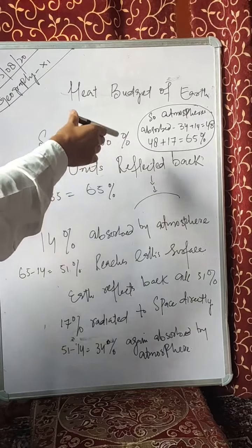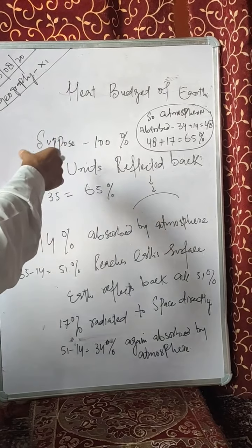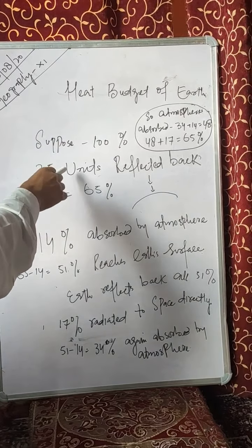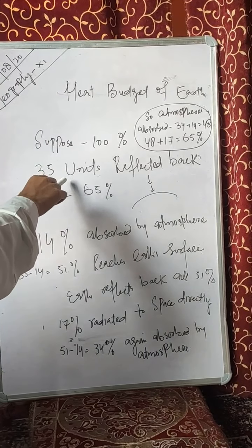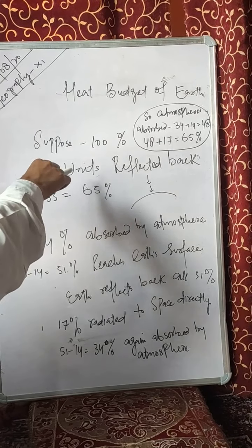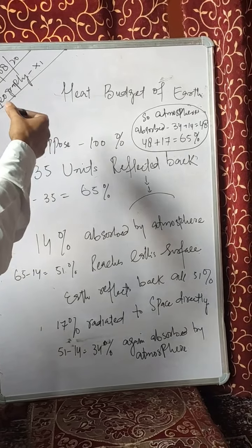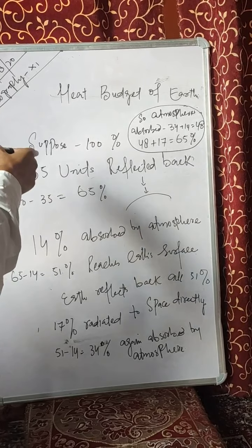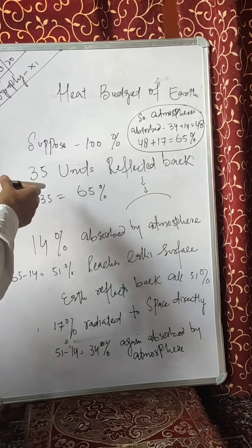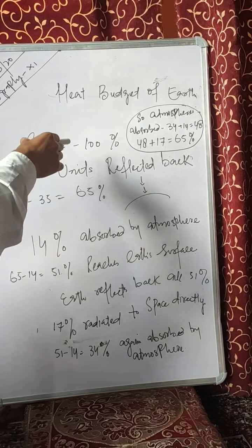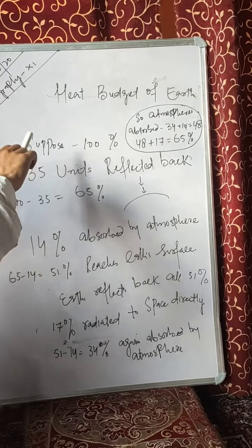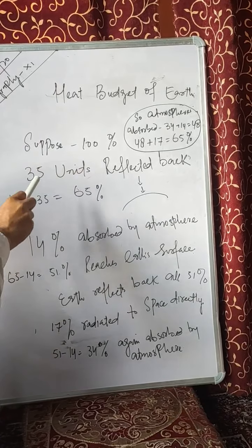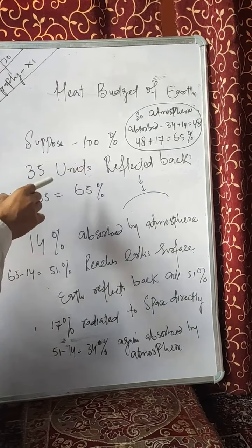These 35 units are reflected back before reaching the earth's surface. Out of this 35 units, 27% is reflected back by the clouds, and 6% is scattered back by the ice and snow-covered areas of the earth's surface.